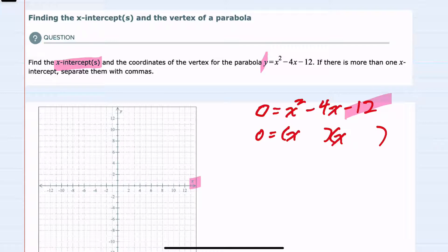We know that our factors for 12 are either 1 and 12, 2 and 6, or 3 and 4. Since we need the middle terms to add to a negative 4, I can see that using a negative 6 and a positive 2 will be the right combination. So I'll write this as x plus 2 and x minus 6.